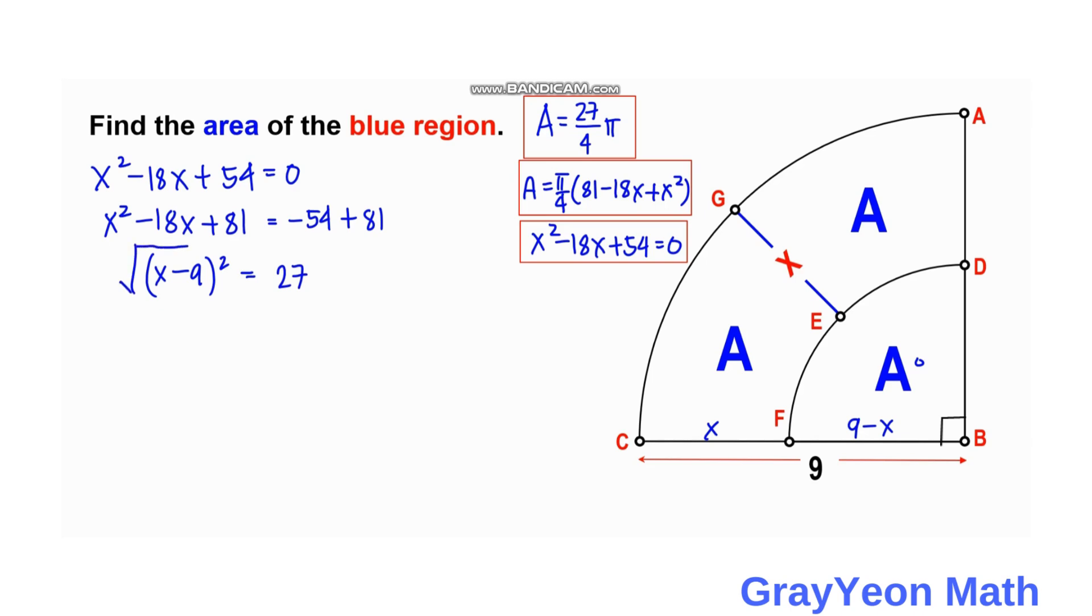And if we take the square root of both sides, so we have X minus 9 equals, if you take the square root of this, this becomes 3 square root of 3, but plus or minus. And we need to put this negative 9 to the right-hand side. So we have X equals 9 plus or minus 3 square root of 3 units. And this is our partial answer.